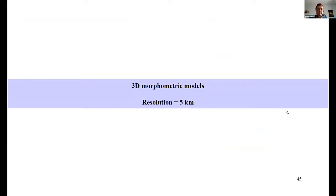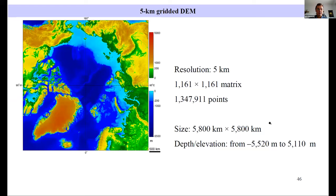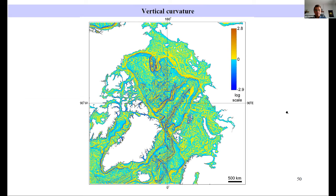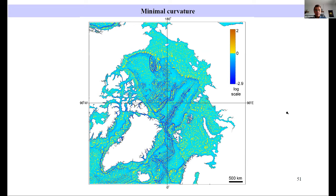Now I'll show you a set of 3D metric models for IBCAO version 3, with resolution five kilometers. It's one million points. Ten years ago, one million points was a huge DEM. Now it's a pretty small DEM. Here you can see morphometric textures which are used for overlaying 3D models. First, depth, horizontal curvature, vertical curvature, minimal curvature, and maximum curvature.